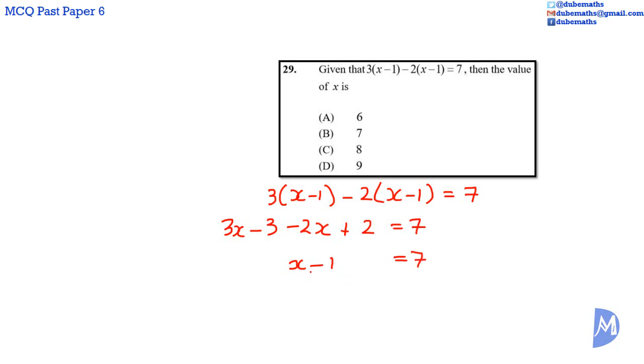We want to remain with X alone on the left hand side, so we add 1 to both sides. And negative 1 added to a positive 1 gives 0, so we have X. 7 added to 1 is equal to 8. The answer is C.